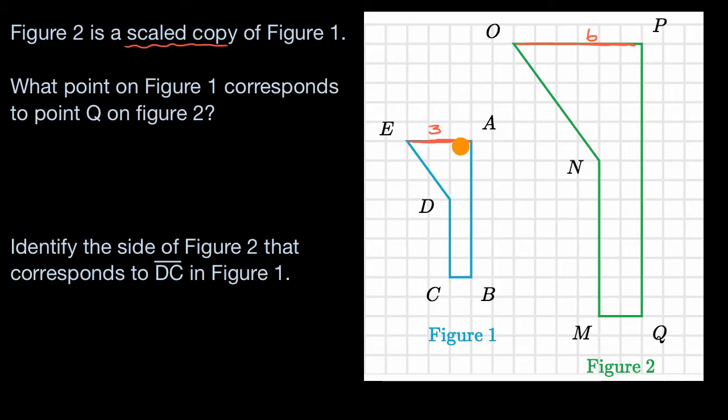And so for this to be a scaled copy, the scaling factor from the corresponding side in figure one to the corresponding side in figure two should be a factor of two. So it's times two right over there. But let's just answer their questions that they're asking us, and then we can also verify that it is a scaled copy.